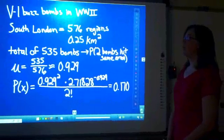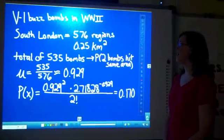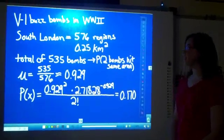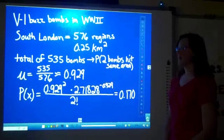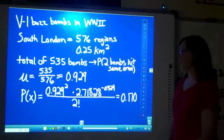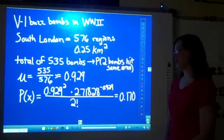The number of V-1 buzz bombs in World War II is an example. In South London, there were 576 regions, each 0.25 kilometers squared. The total number of bombs was 535, so we want to find the probability that two bombs hit the same area.